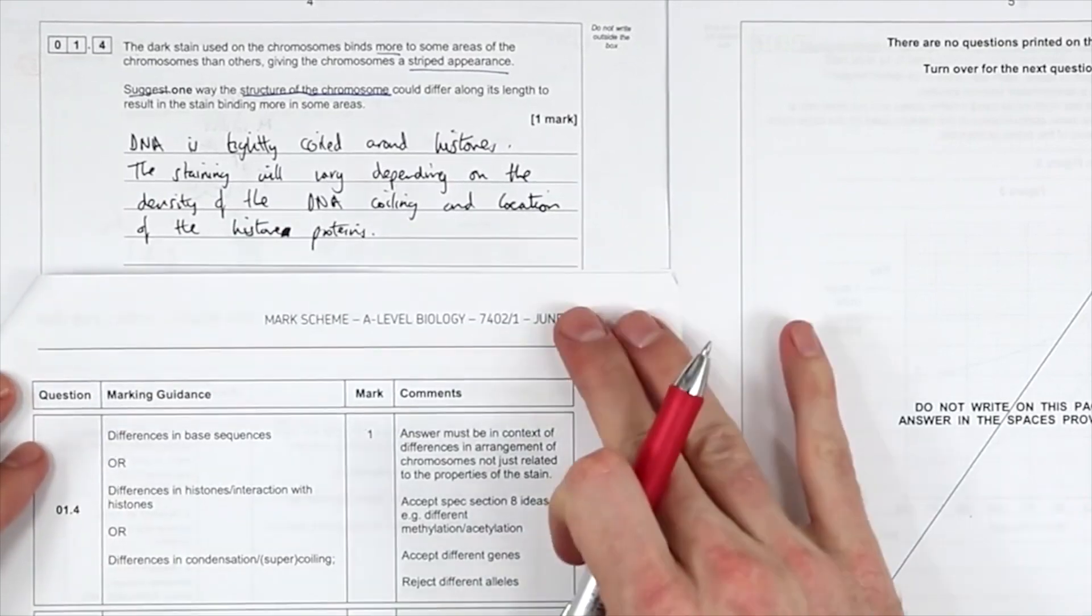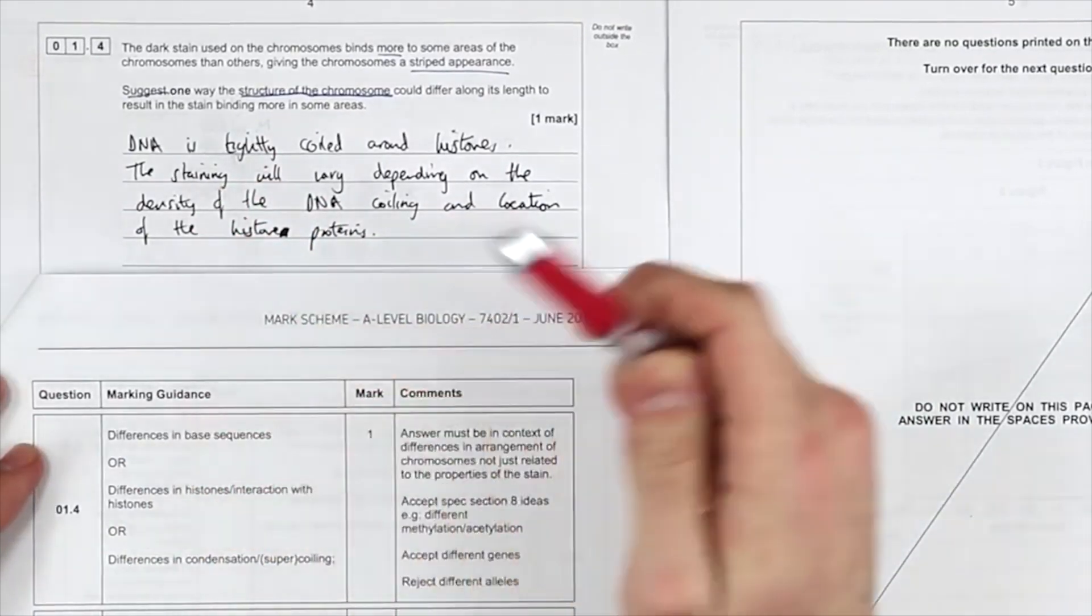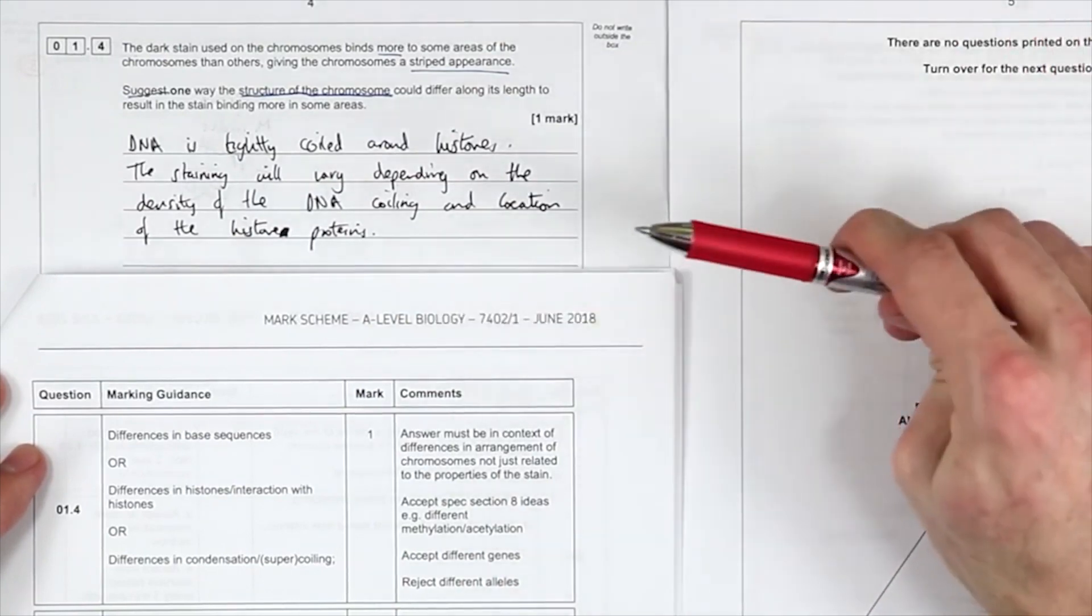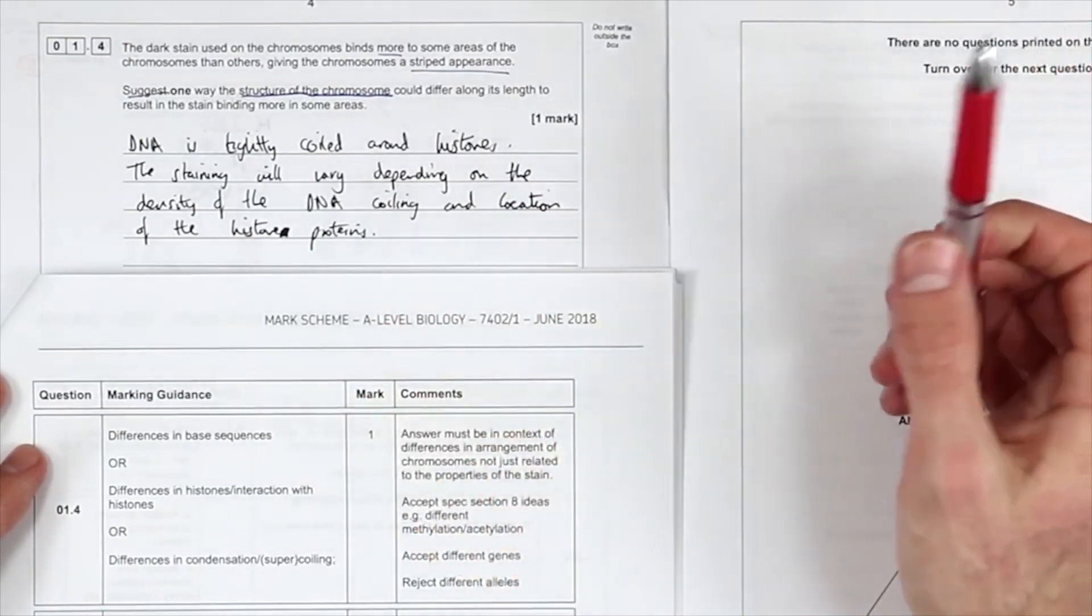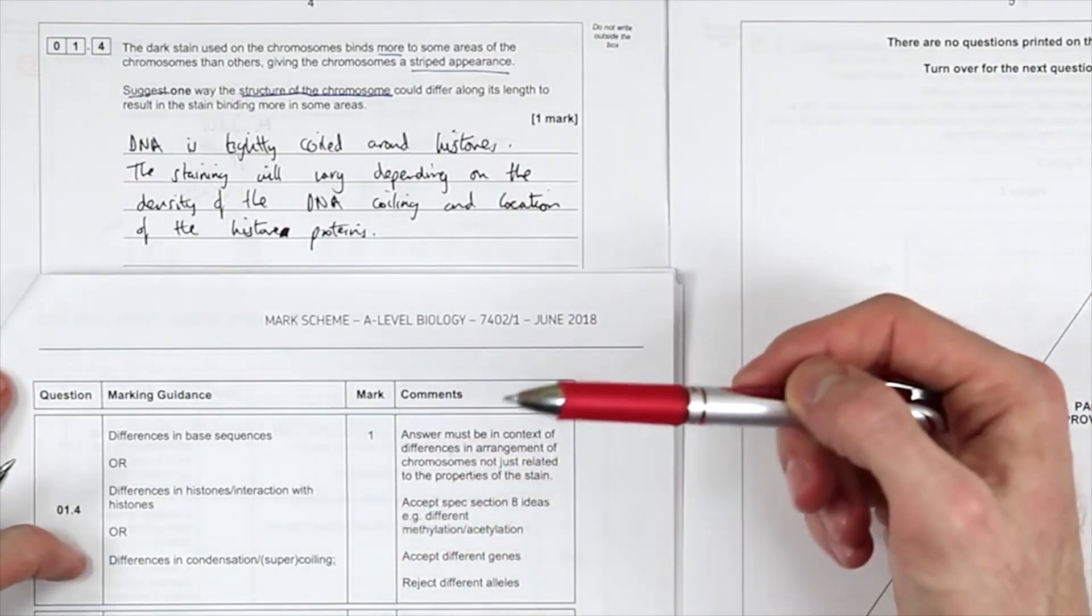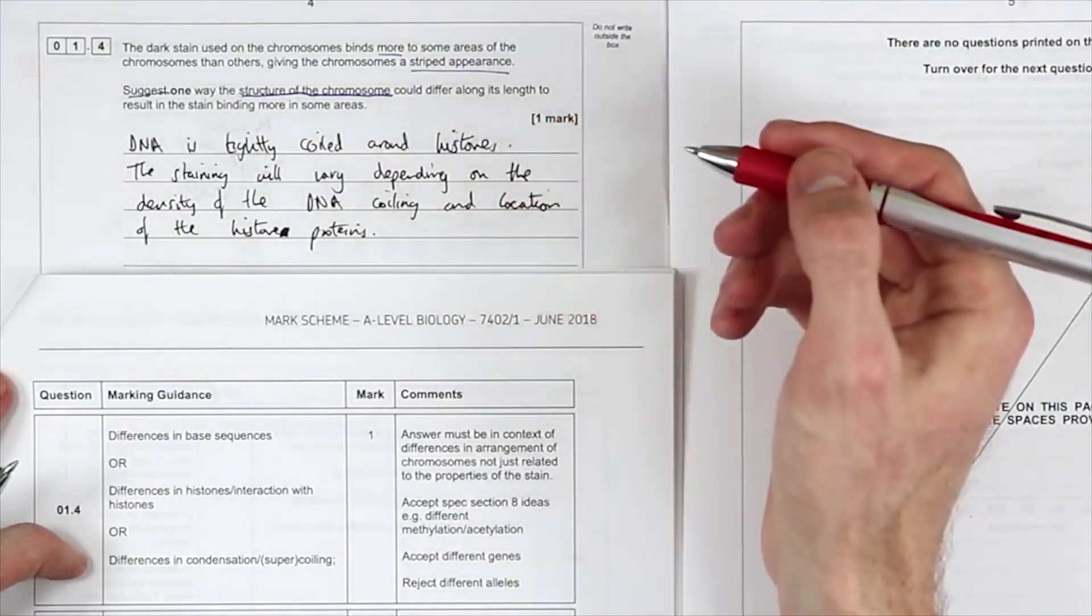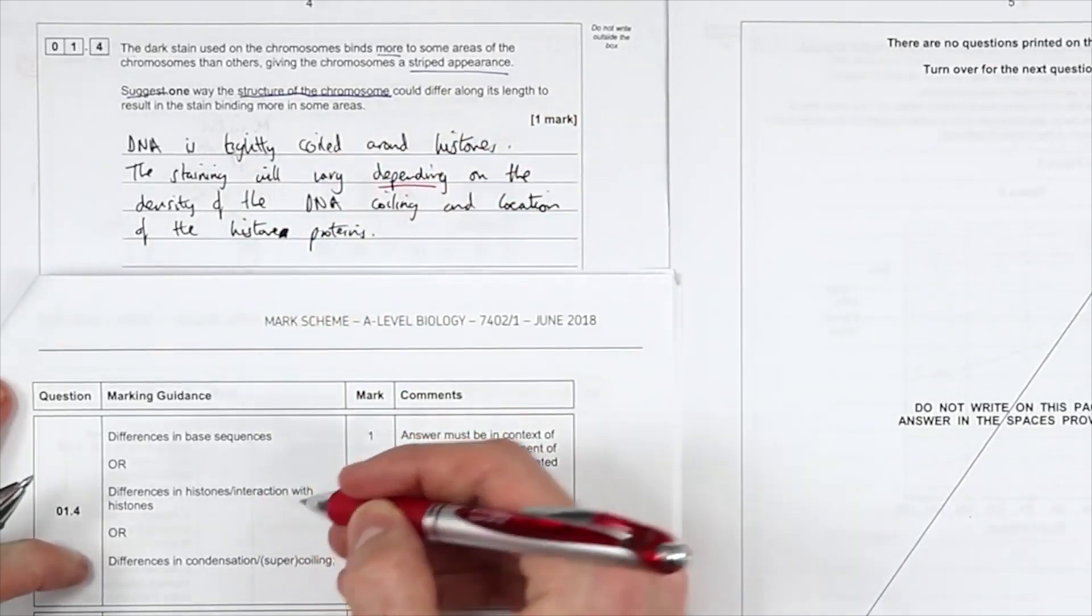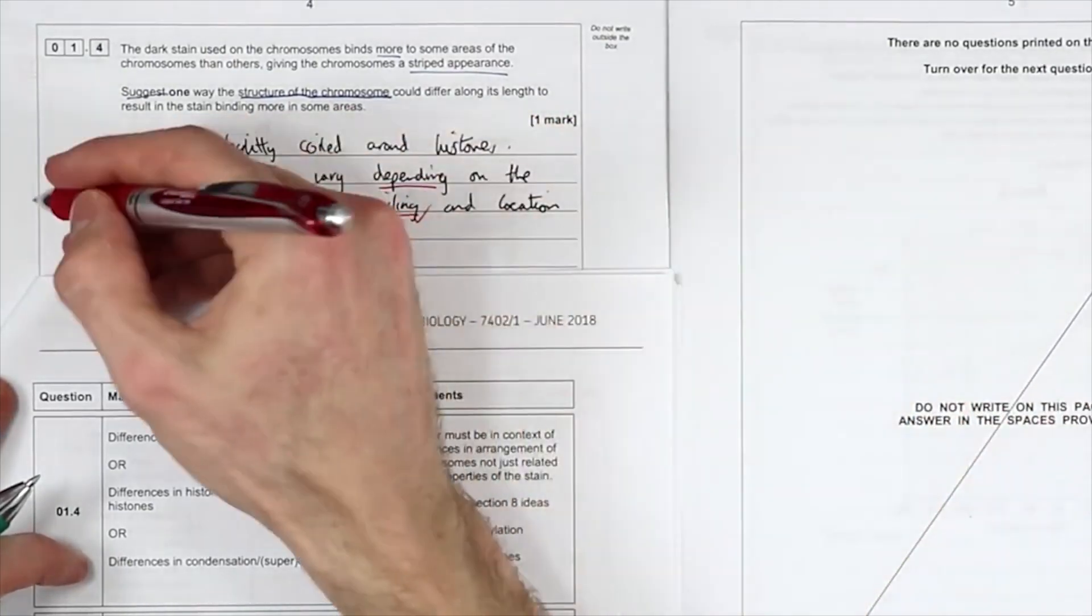Okay, DNA. Okay, so we've got various answers here. Why will there be, this is, I mean, suggest questions should have multiple answers, as far as I'm concerned. Very rarely could there be only one scientifically possible suggestion to a suggest question. Different DNA base sequences, different association with histones or interaction with histones, different condensation or supercoiling. So, staining would depend on the density of the DNA coiling. Okay, so I kind of got both of these. The location of the histones. I'll put coiling in as well because it was a mark for one.